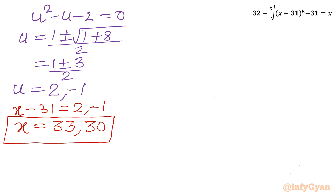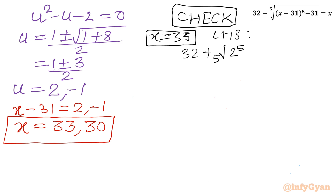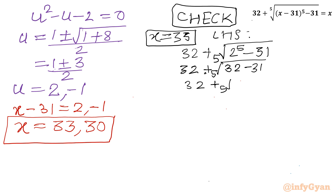Let's cross-examine the solutions. For x = 33: LHS = 32 plus the 5th root of (33 minus 31) power 5 minus 31 = 32 plus the 5th root of 32 minus 31. The 5th root of 32 is 2, and 5th root of 1 is 1, so 32 plus 1 = 33, which equals x. Verified.